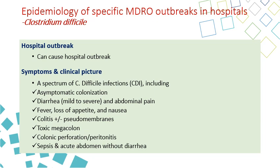C. difficile can cause hospital outbreaks. Symptoms range from asymptomatic to mild or severe diarrhea, fever, colitis, pseudomembranous colitis, toxic megacolon, colonic perforation, and peritonitis — severe complications that can lead to sepsis and sometimes death.